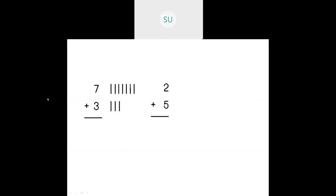Let's see the next question: two plus five. First we'll draw two tally marks: one, two. Then for five: one, two, three, four, five. Now we count all of them: one, two, three, four, five, six, seven. So two plus five is equal to seven.